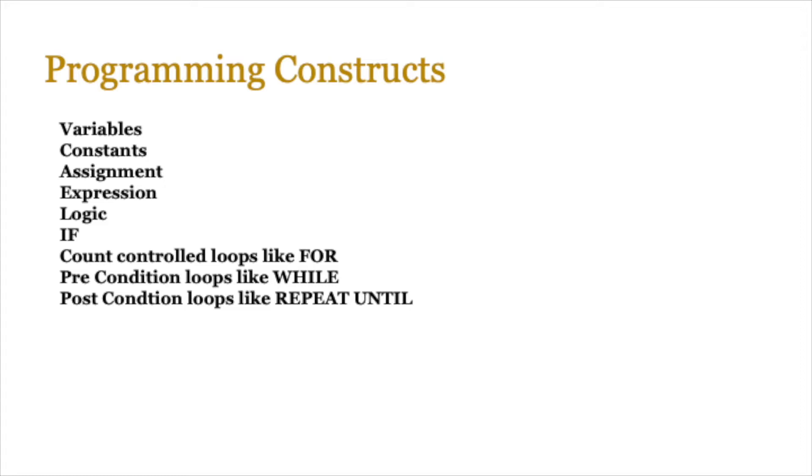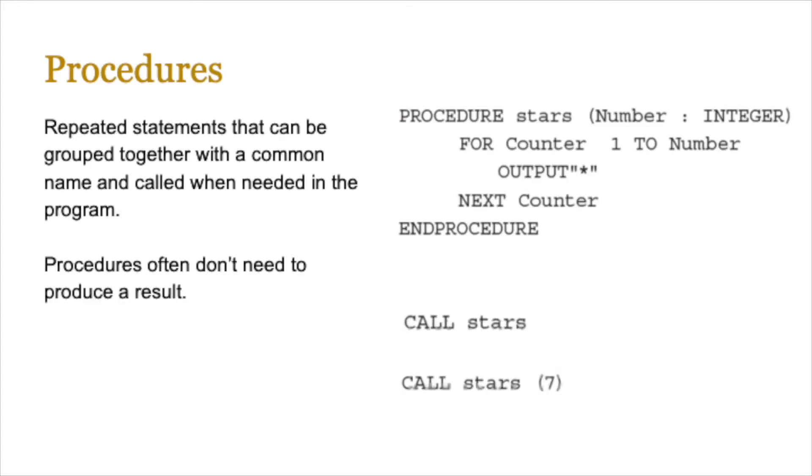You should know how an if else elif statement works in Python. You should be able to use count control loops like four, for in the range one comma ten in brackets, colon. Similarly, you should be able to use preconditioned loops like while in Python. And of course, Python doesn't have a repeat until loop. So you can't actually use it. However, you need to be aware of the pseudocode version of that. But do remember that we don't necessarily need to code it in Python. Now most of these are pretty straightforward. So let's just jump into looking at procedures.